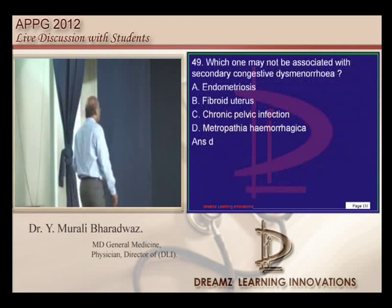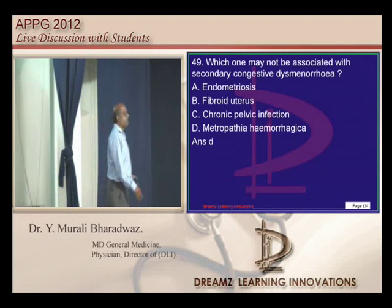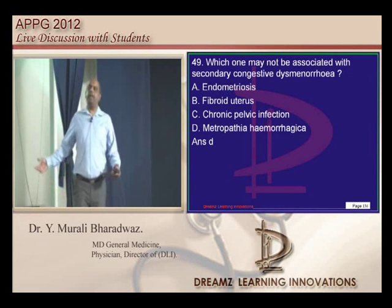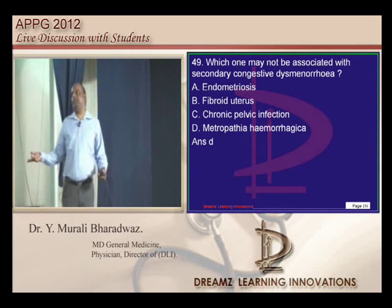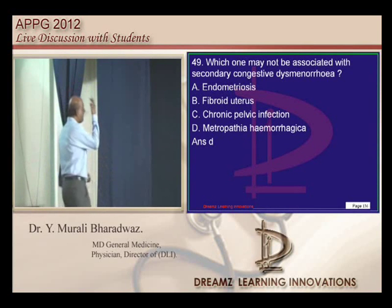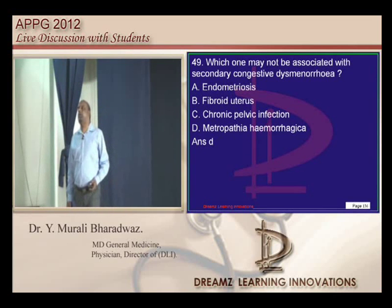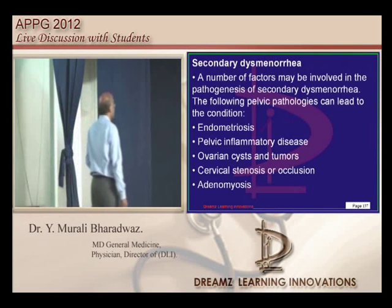What are the causes of secondary congestive dysmenorrhea? Any pelvic infection, endometriosis, or fibroids — there is a big list of causes which can lead to development of secondary dysmenorrhea.